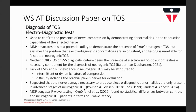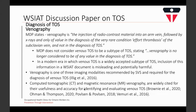With respect to venography, the paper states it only has value in diagnosing effort thrombosis of the subclavian vein and not in diagnosing TOS, since the paper does not consider venous TOS a subtype. In a modern era where venous TOS is widely accepted as a subtype, including this information in the WSIAT document is misleading and potentially harmful. Venography is one of three imaging modalities recommended by the Society for Vascular Surgery for the diagnosis of venous TOS. CT and MR venography are also widely cited for their usefulness in identifying and evaluating venous TOS.